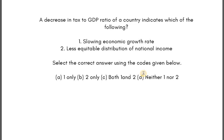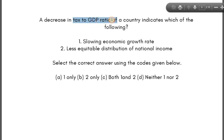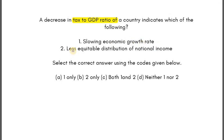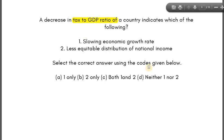Question number one: a decrease in tax to GDP ratio of a country indicates which of the following? Number one: slowing economic growth rate. Number two: less equitable distribution of national income. Select the correct answer — one only, two only, both, or none. Pause and try to come up with the right answer.